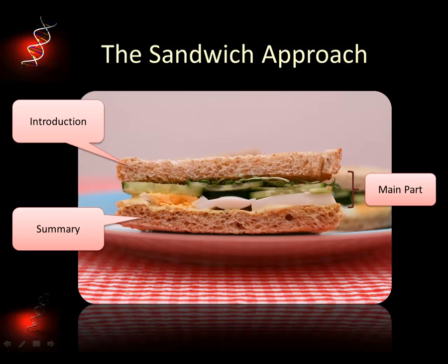The task of the introduction is basically to establish the background of the topic you're going to talk about, and then narrow that background down to a more specific topic. The summary has exactly the opposite role — it first summarizes the specifics of the topic you were discussing, and then contextualizes and widens it again to the background of your field or that particular area in your field.